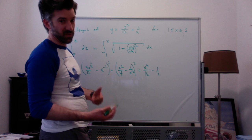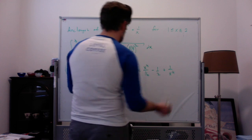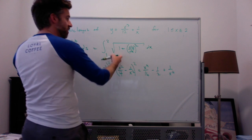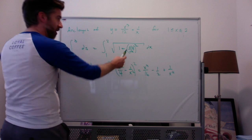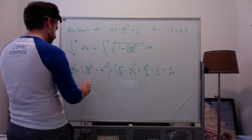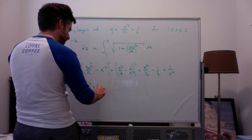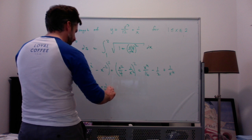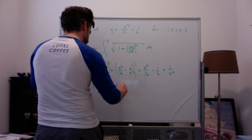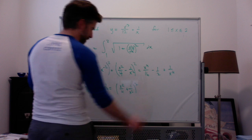Negative 1/4 plus negative 1/4 is negative 1/2. And I get plus 1 over x to the 4th, because negative 1 over x squared squared is 1 over x to the 4th. Then if I add 1 to this, I get x to the 4th over 16 plus 1/2 plus 1 over x to the 4th, which is exactly the same as x squared over 4 plus 1 over x squared, all squared.